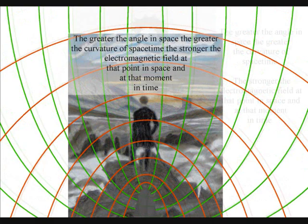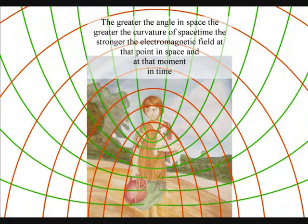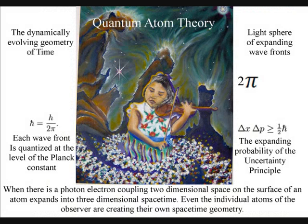The greater the angle in space, the greater the curvature of space-time, the stronger the electromagnetic field at that point in space, and at that moment in time.